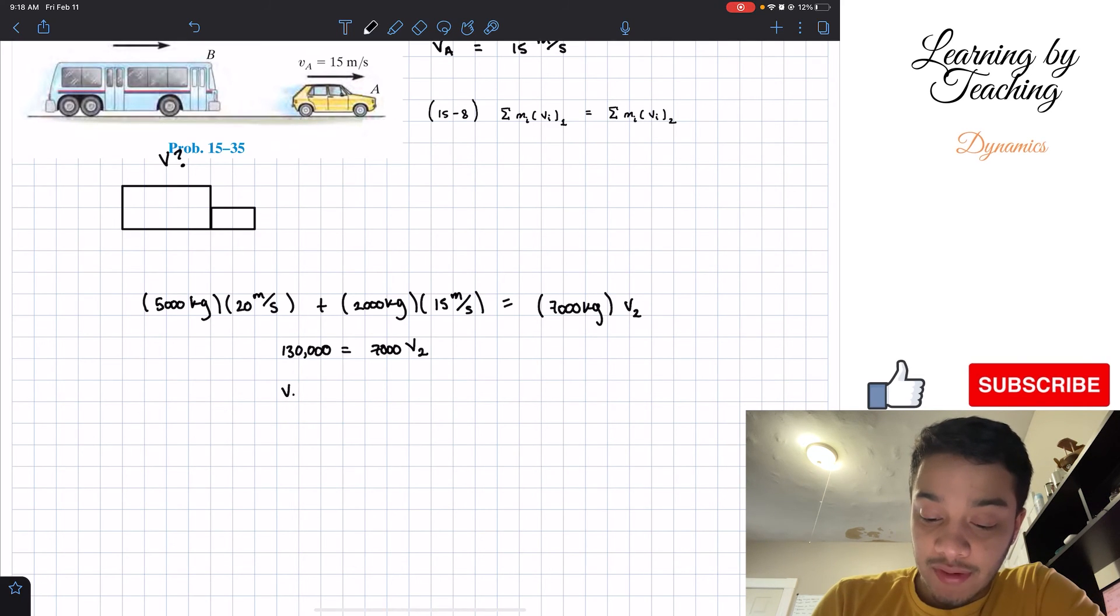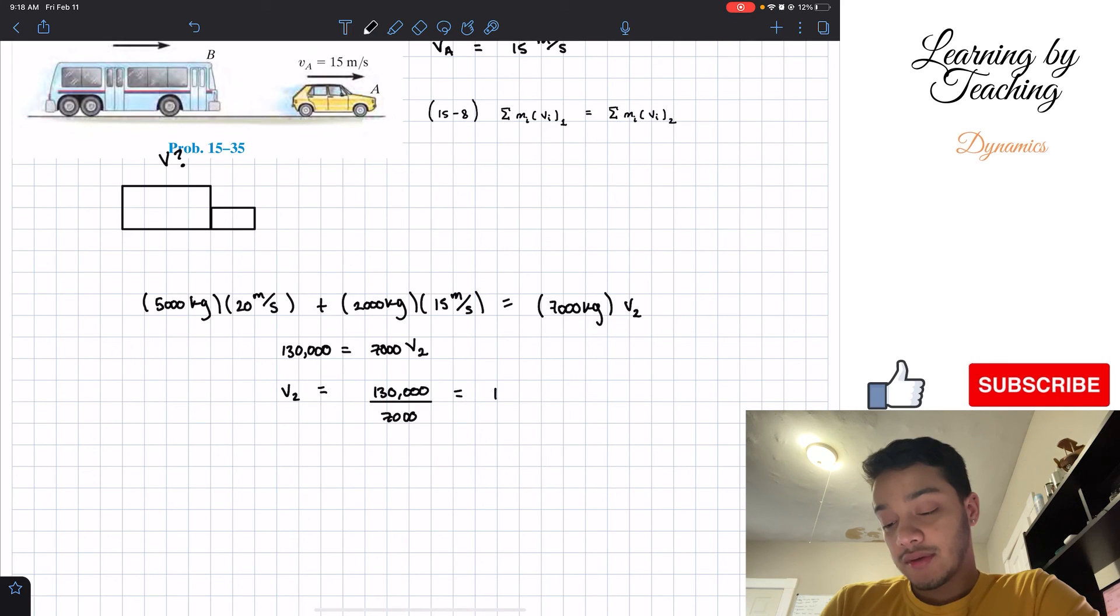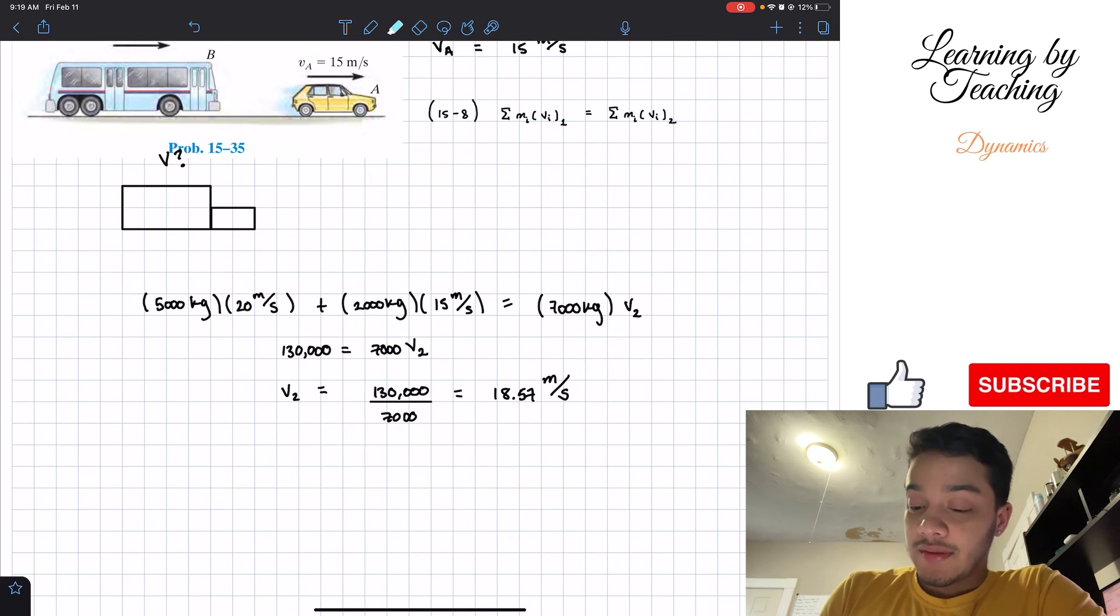If I solve for my velocity, well this velocity is just going to be our 130,000 divided by 7000. And if we plug this into our calculator, it gives me a total of 18.57 meters per second. And this should be our final answer for this problem.